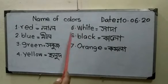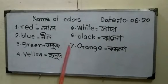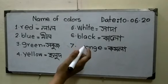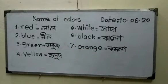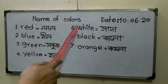Okay, Number 6 - Black. B-L-A-C-K. Black. Number 7 - Orange. O-R-A-N-G-E. Orange means Komula. Okay. Note: the first letter should be small. Do not mix capital and small letters. First letters should be small. Okay.